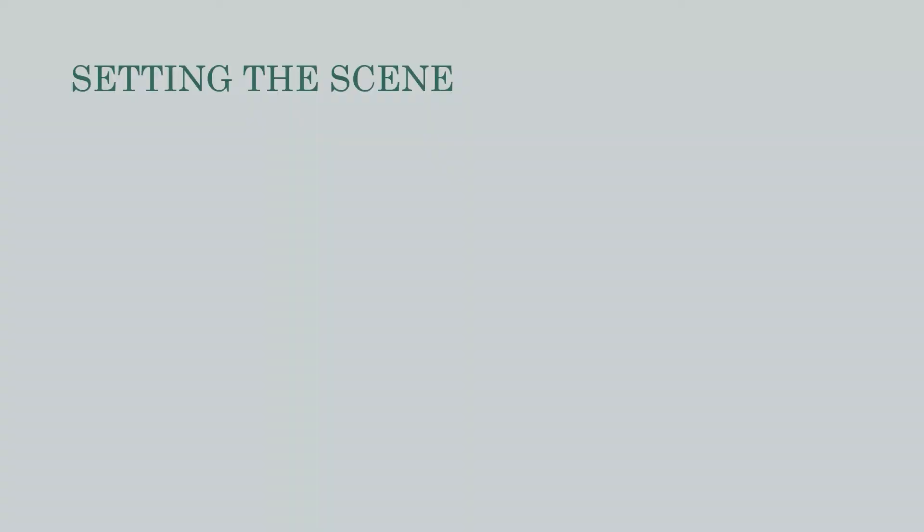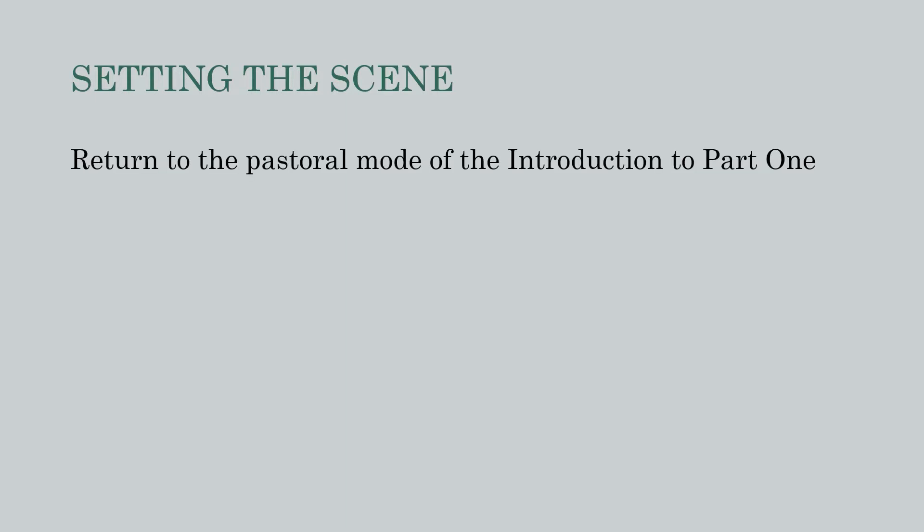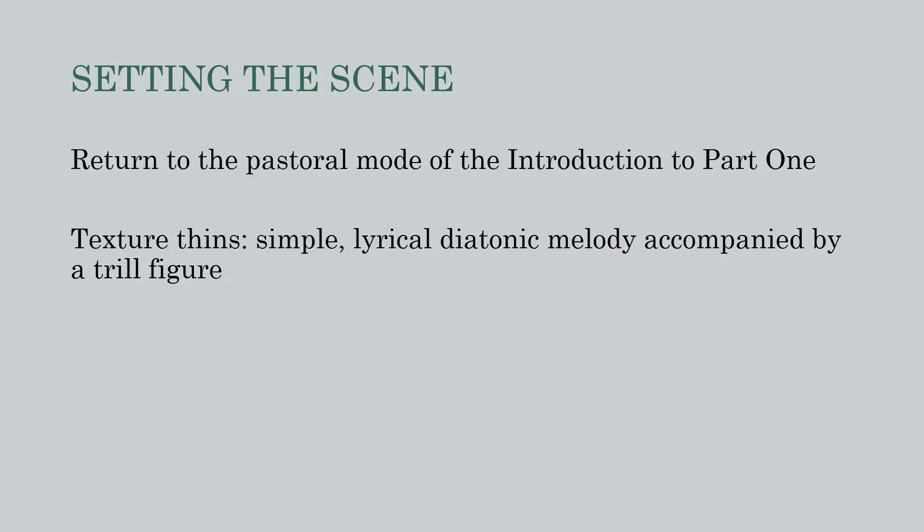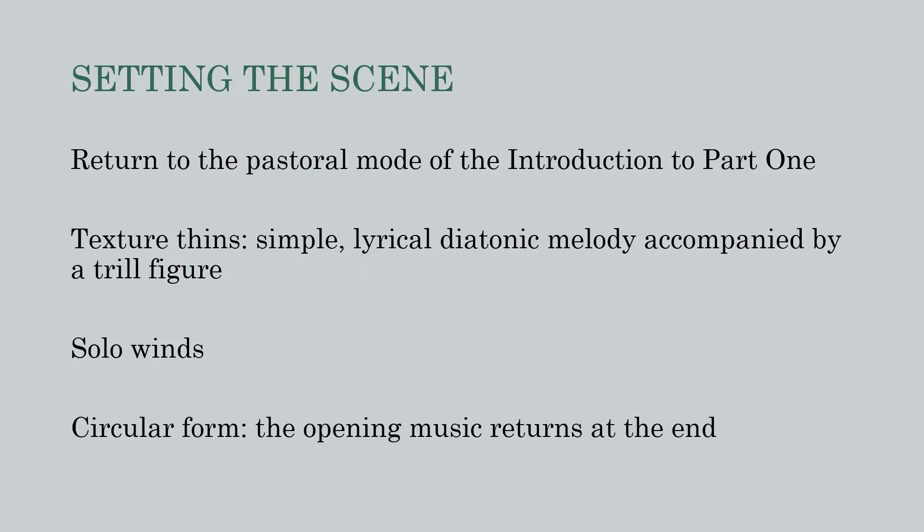The beginning of Spring Rounds marks a return to the pastoral mode of the introduction to part one, following the military-dominated modes of augurs and abduction. After the pounding chords and repeated fanfares at the end of abduction, the texture suddenly empties out and we hear a simple lyrical diatonic melody accompanied only by a trill, all played softly by solo winds. The same music returns at the end of the scene, and that circular formal arrangement is itself an indicator of the pastoral mode.